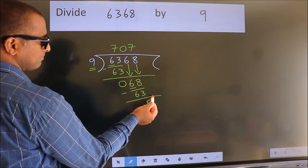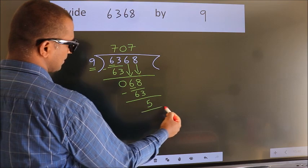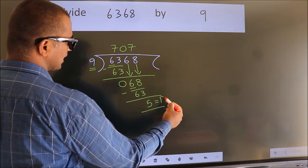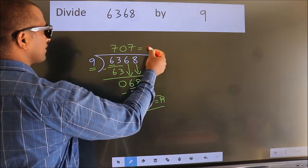No more numbers to bring it down. So, we stop here. This is our remainder. This is our quotient.